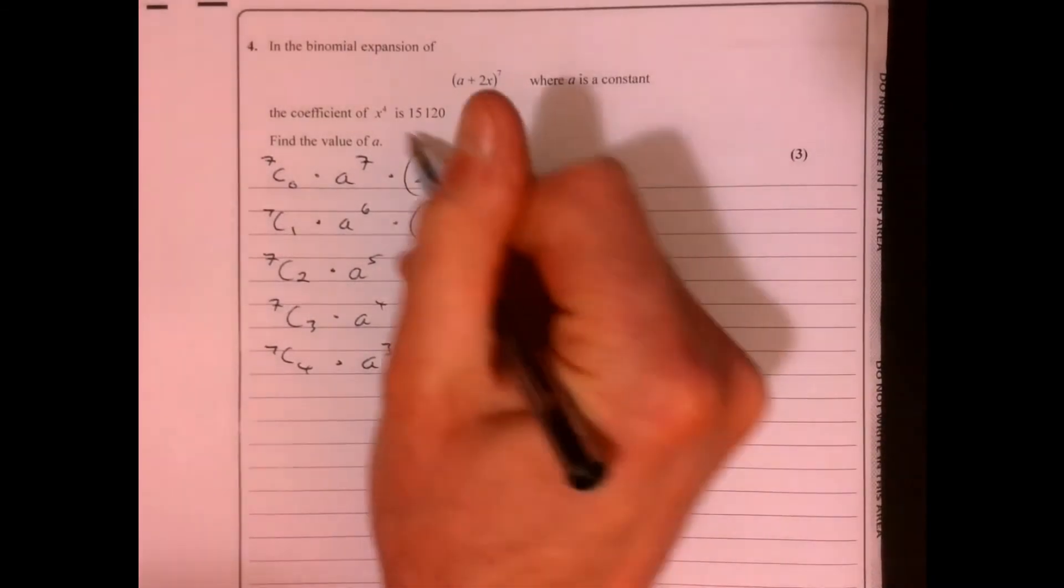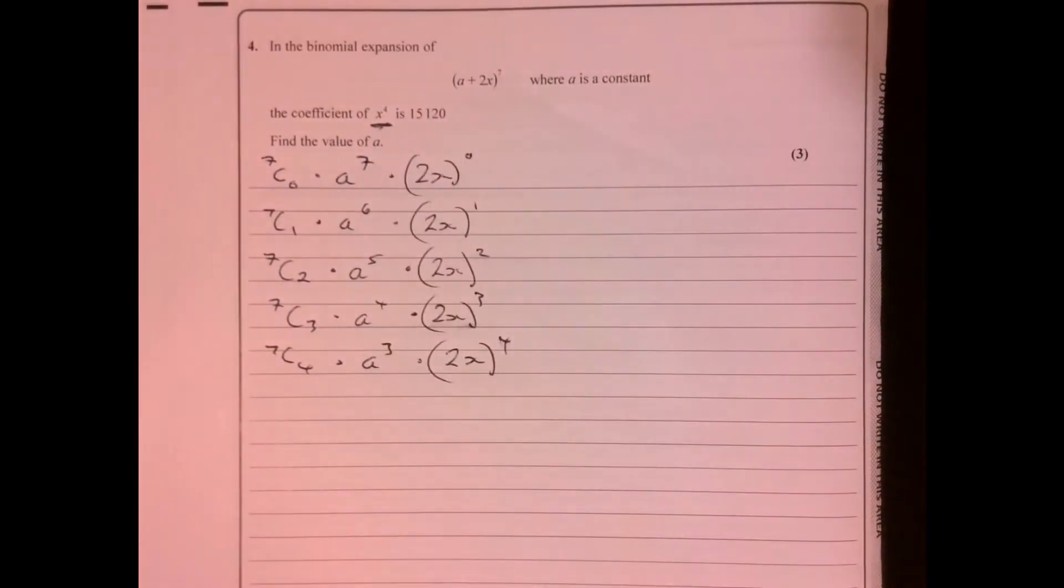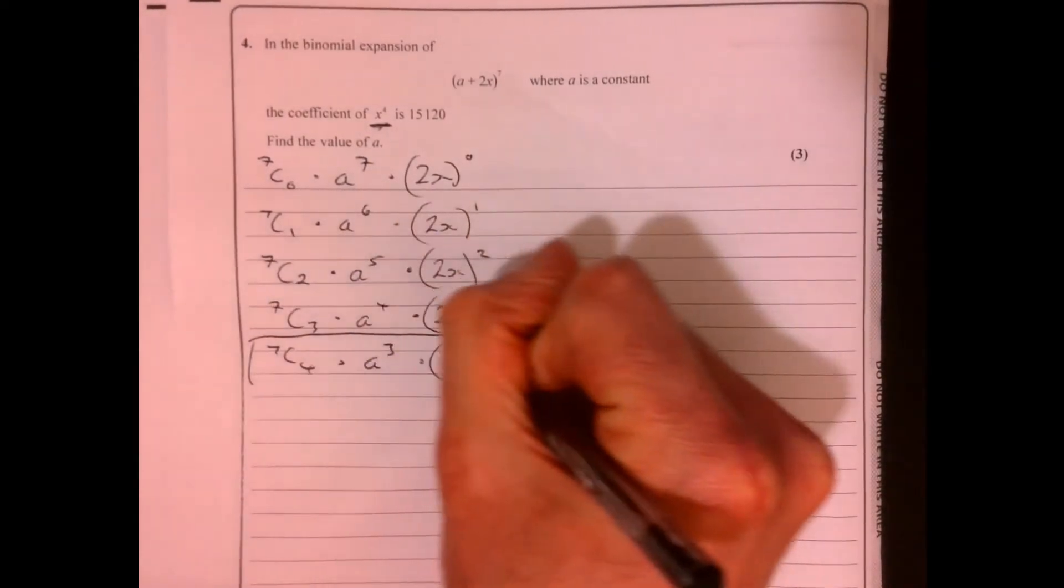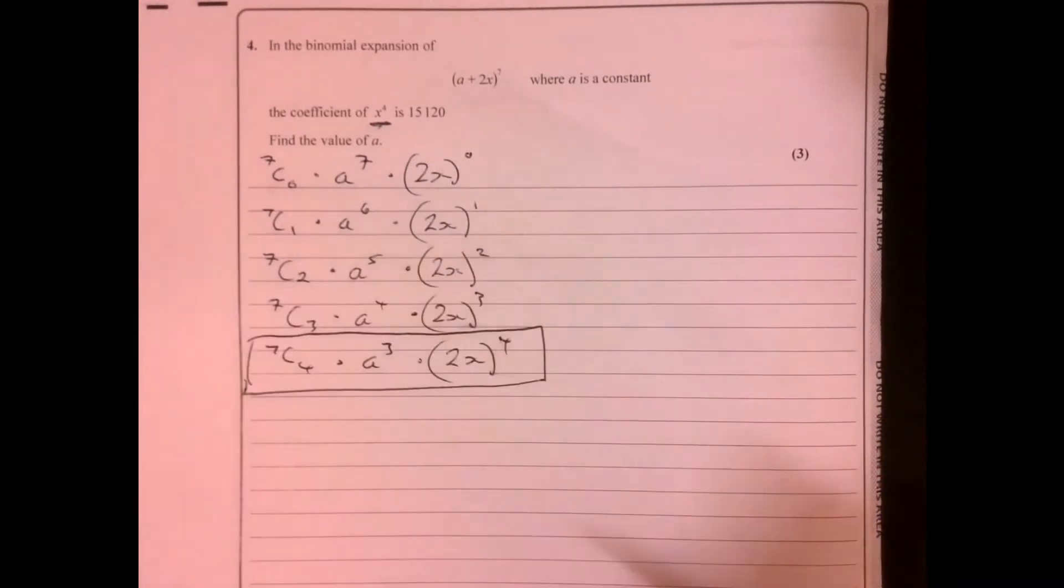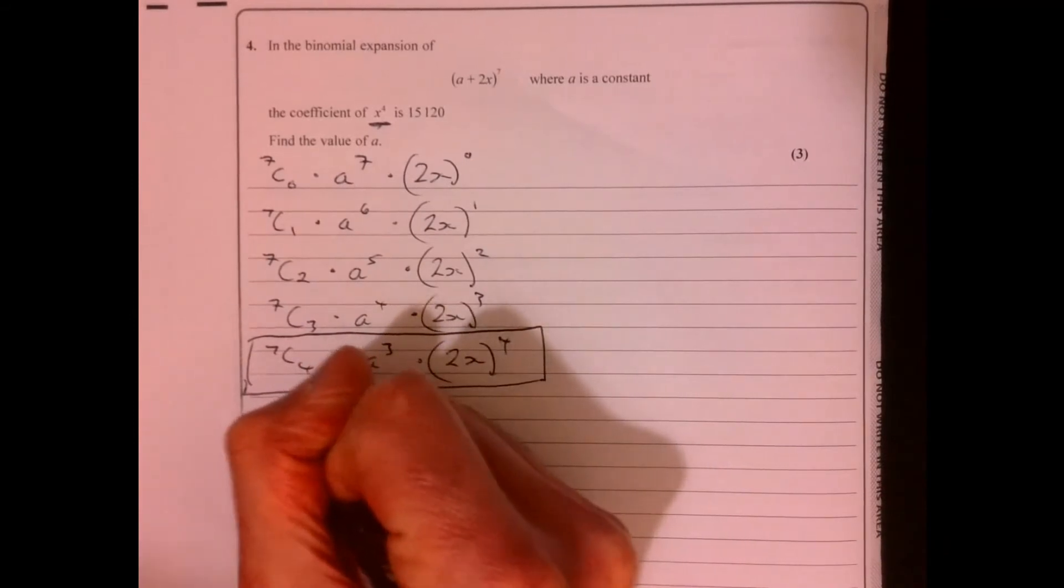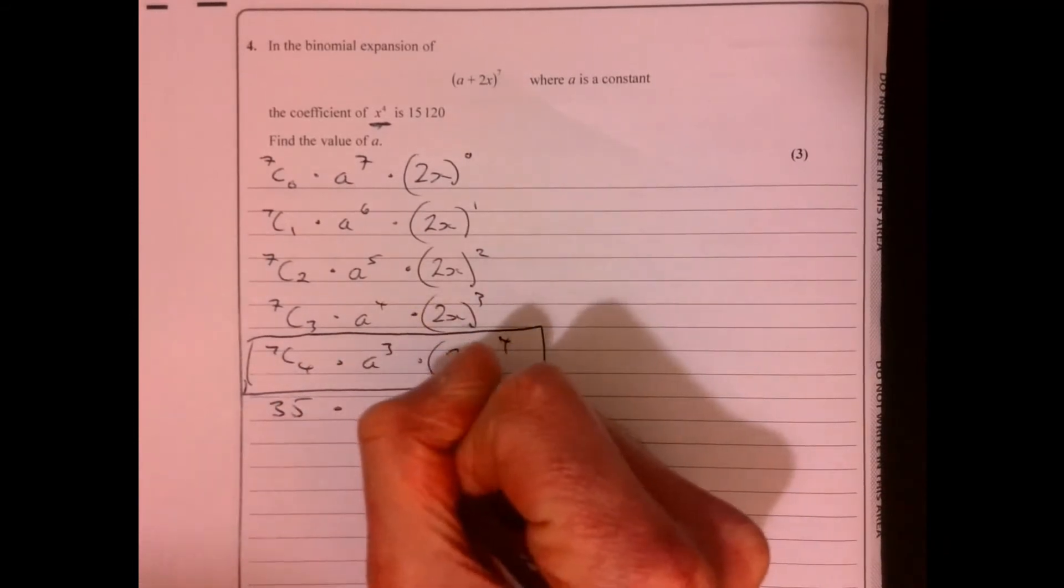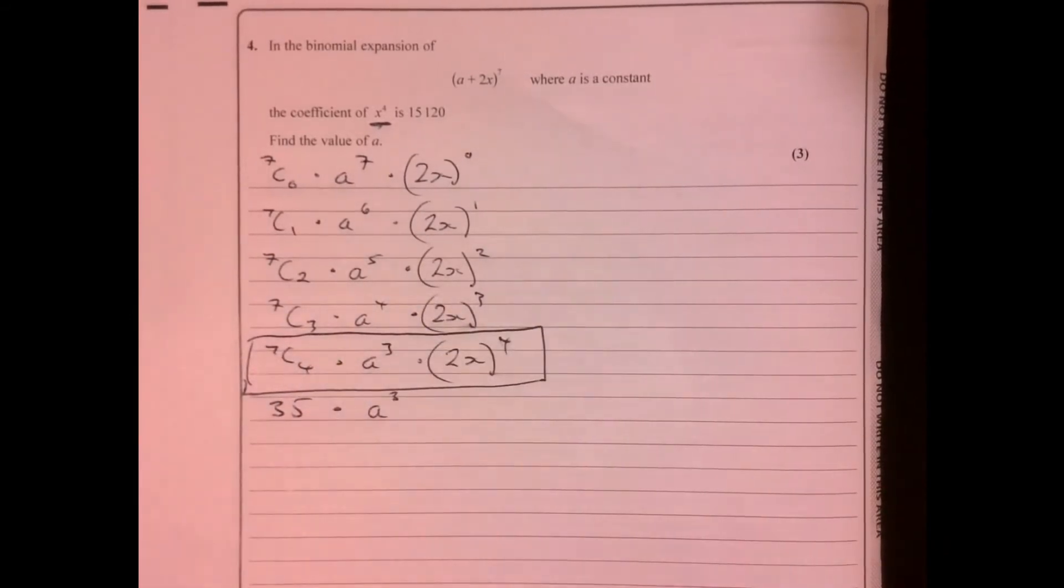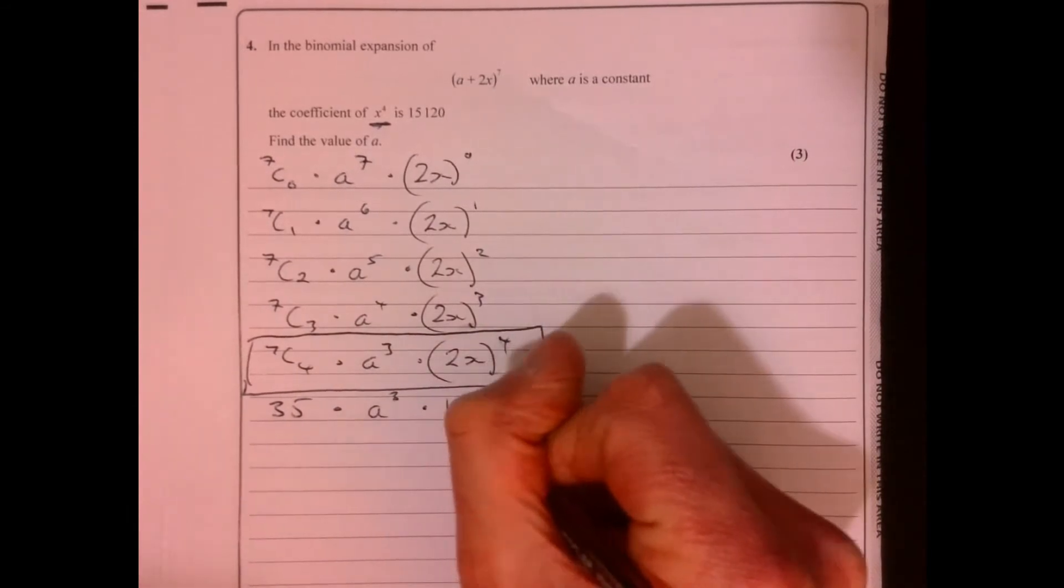Which one's going to give me—ah look, I'm going off the coefficient of x to the power of four. So really I'm only actually interested in this line just here. So 7C4, obviously just pop that into your calculator. That's going to give you 35 and a to the three, and we're going to times that by 16x to the four.